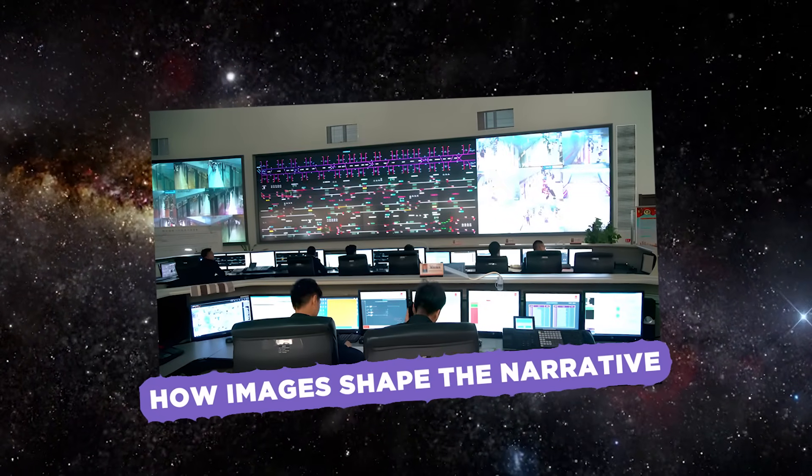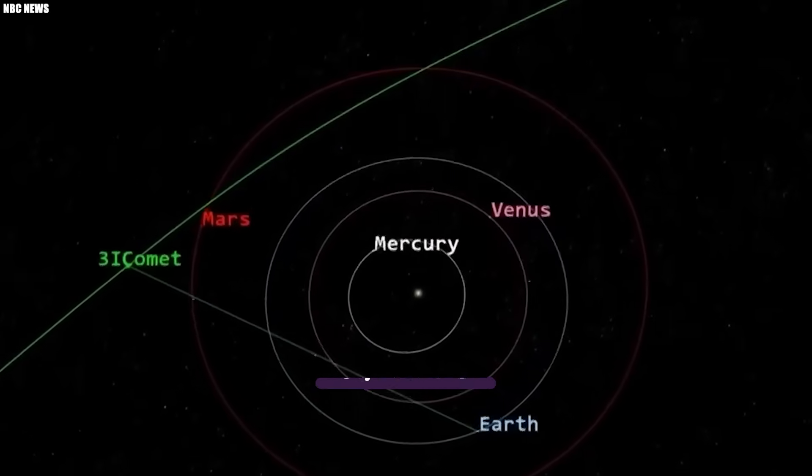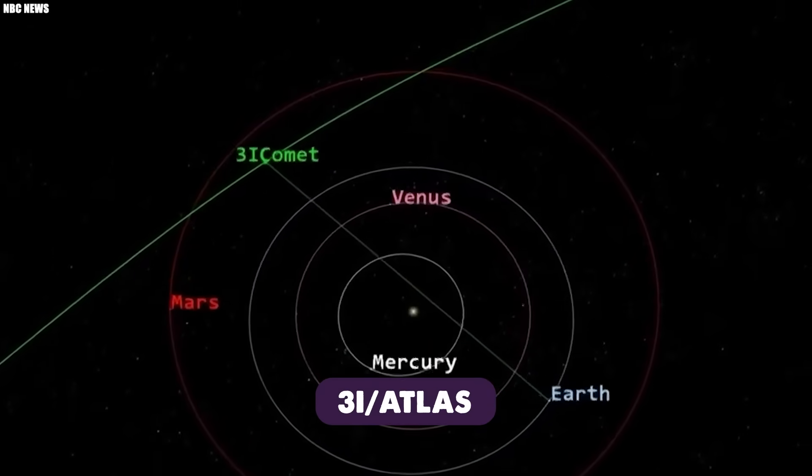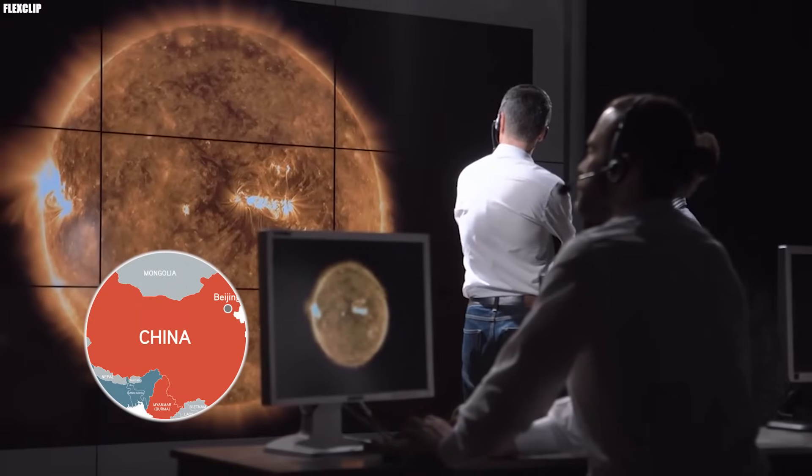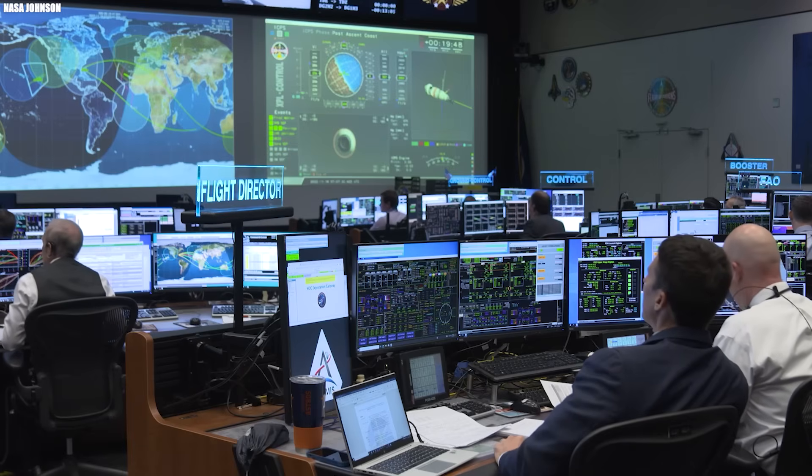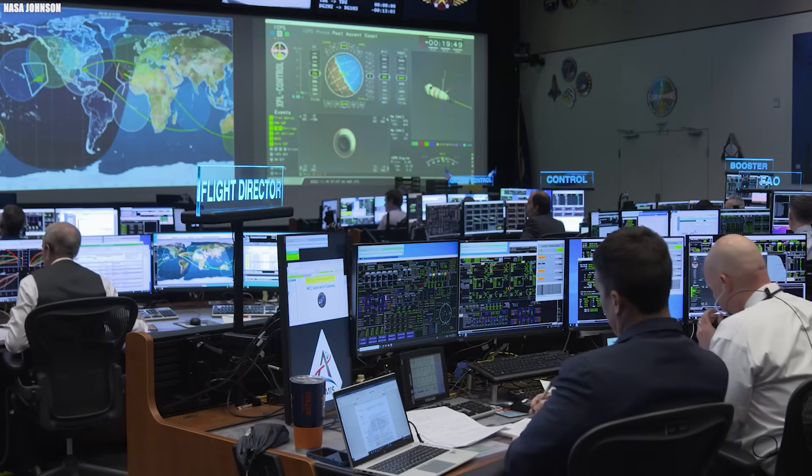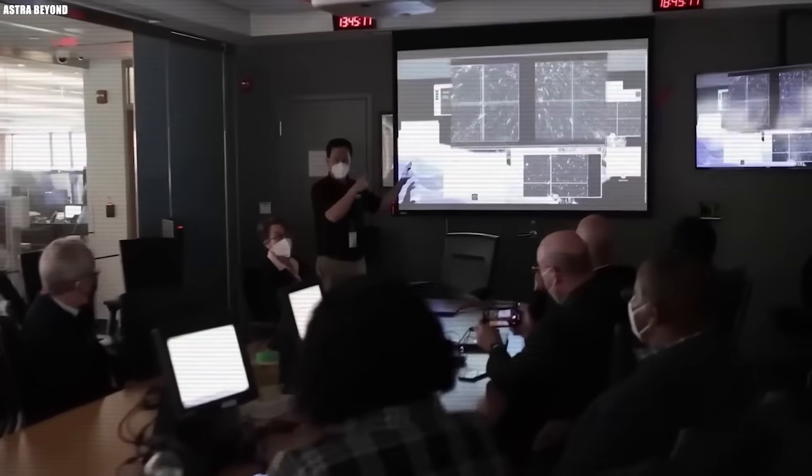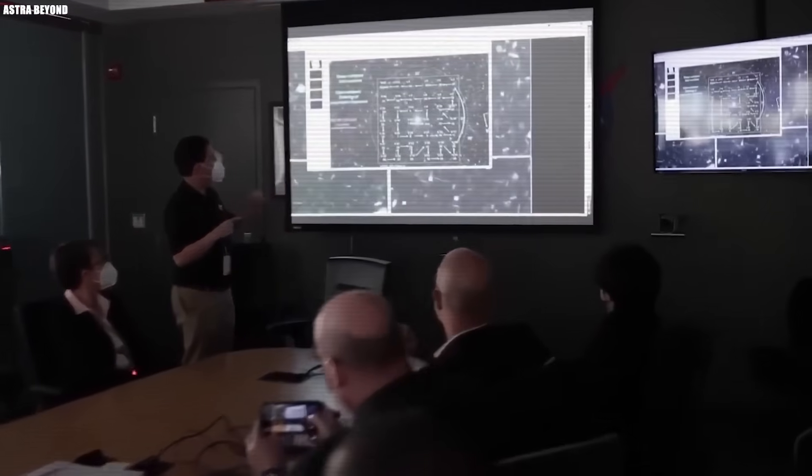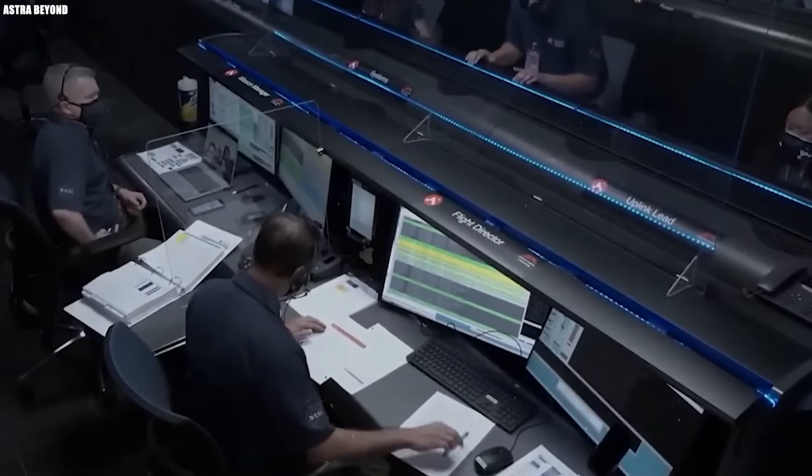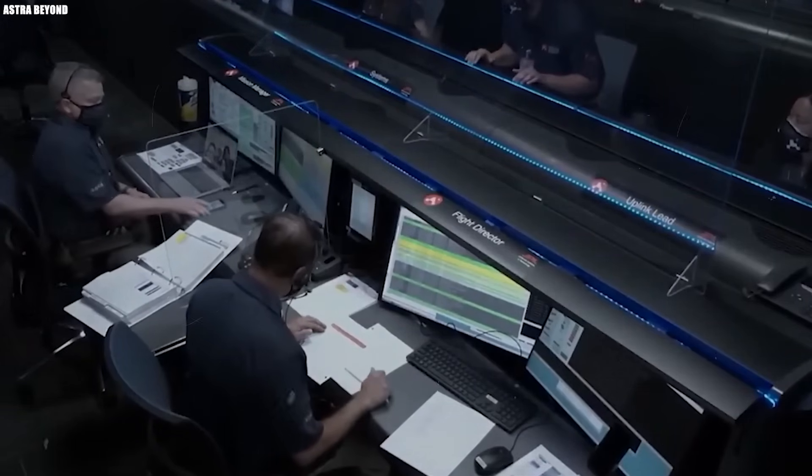How images shaped the narrative. With Comet 3I Atlas, that power may now sit in the hands of the Chinese astronomy community. If their observatories did keep tracking the comet while others paused, then they are the only ones who captured a continuous visual record of a very strange object behaving in very unexpected ways. And if they hold exclusive data from that window, then they also hold the pen. They get to write the first draft of what happened.